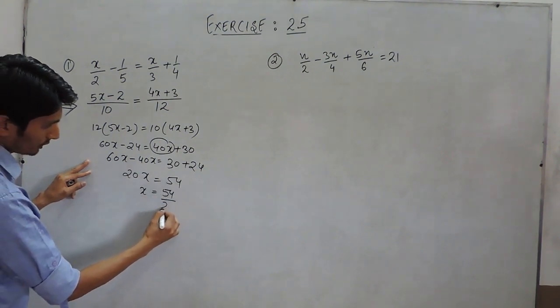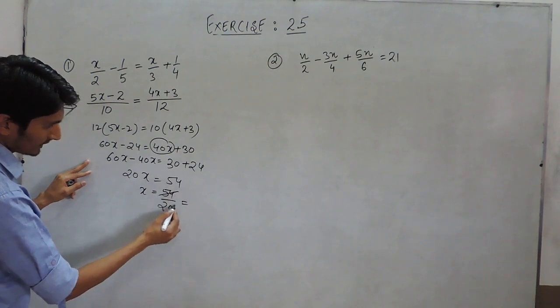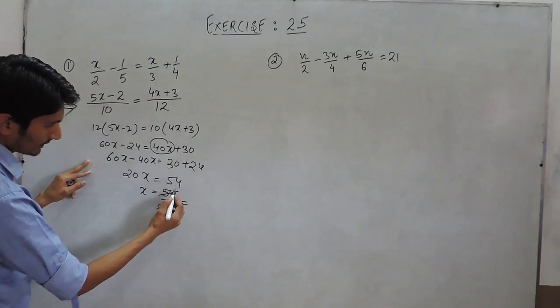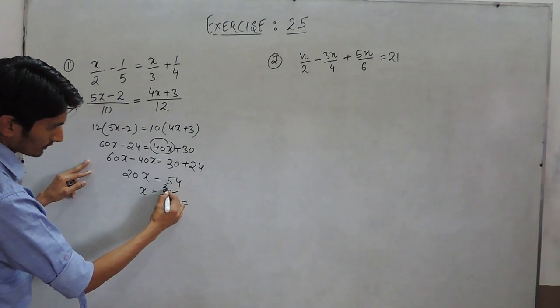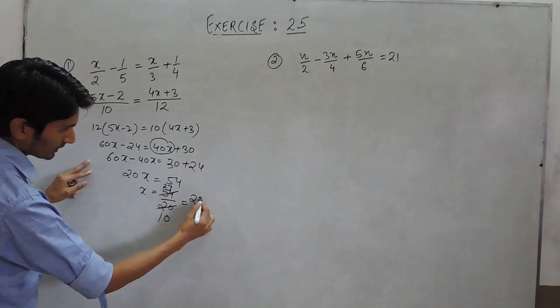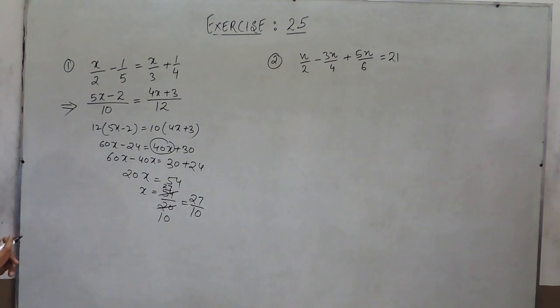x would be 54 upon 20 and further cancel out. This would come out to be 27 upon 10.